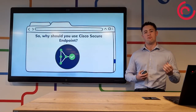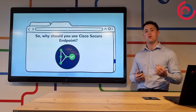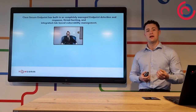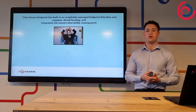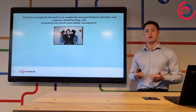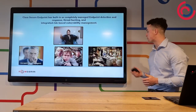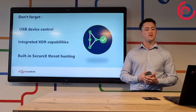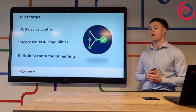Now that we've established why endpoint protection is needed and given a quick overview of how it works, let's talk about why you should use Cisco Secure Endpoint to protect your organization today. Cisco Secure Endpoint has built-in or completely managed endpoint detection and response, threat hunting, and integrated risk-based vulnerability management. This means it doesn't sit back and wait for something bad to happen — instead it continuously monitors end user devices to detect, investigate, and respond to cyber threats before any detrimental harm can be done. Cisco Secure Endpoint also features USB device control, integrated XDR capabilities, and built-in SecureX threat hunting.